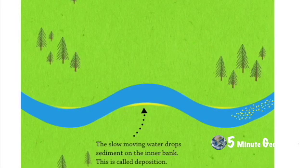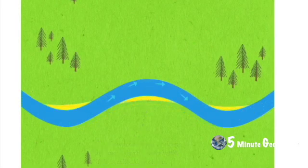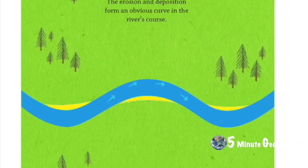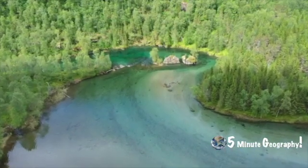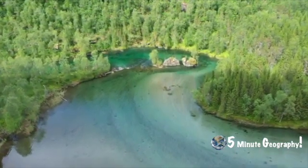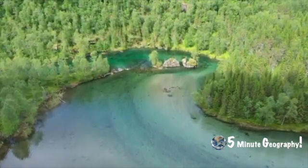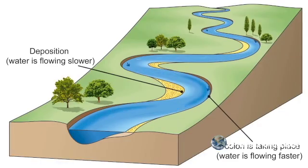As the surface flow of water hits the outer bank, it corkscrews and flows along the riverbed, then transfers the eroded material sideways and forward towards the inner bank. Here the water is slow-flowing and therefore has less energy, so the material is deposited. Deposits build up over time and sand and gravel form a point bar.